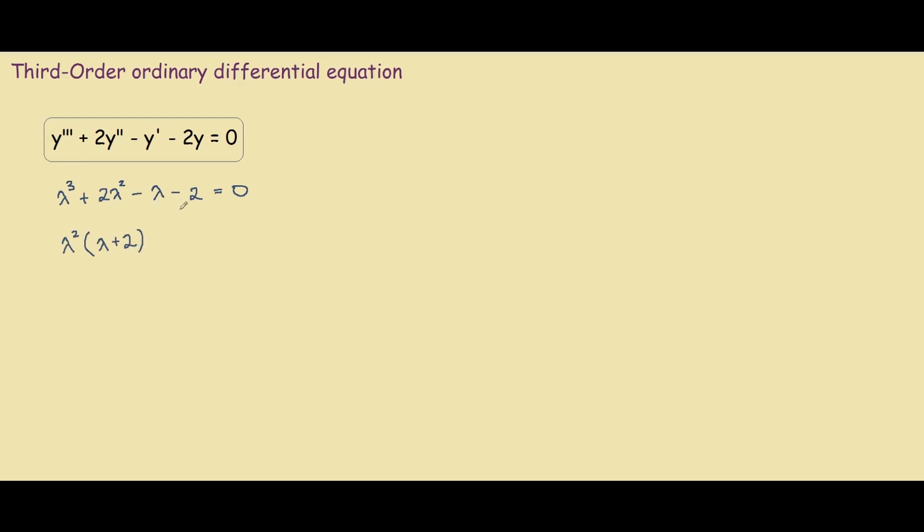So we have lambda plus 2. Then for these two terms, I'm going to do plus negative lambda minus 2. And that will equal to 0.